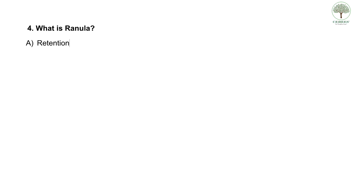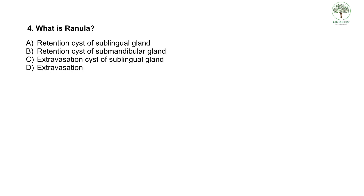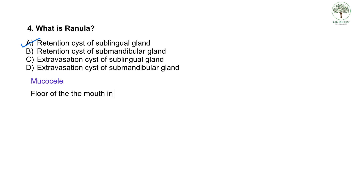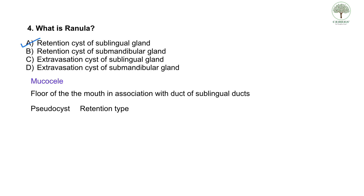The fourth question: what is a ranula? Options are: A) retention cyst of sublingual gland, B) retention cyst of submandibular gland, C) extravasation cyst of sublingual gland, D) extravasation cyst of submandibular gland. A ranula is a mucocele found in the floor of the mouth, usually in the sublingual space and associated with the ducts of the sublingual gland. It is a pseudocyst, and retention cysts are pseudocysts, so the correct answer is A — retention cyst of sublingual gland.